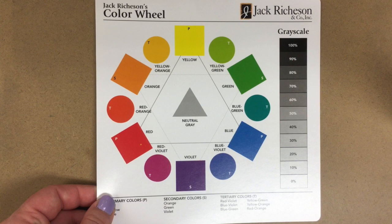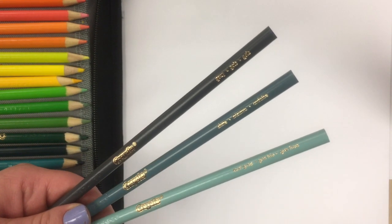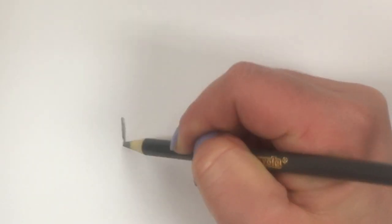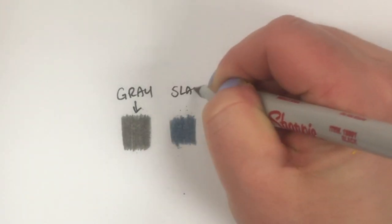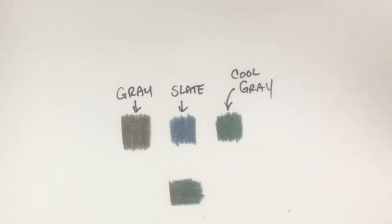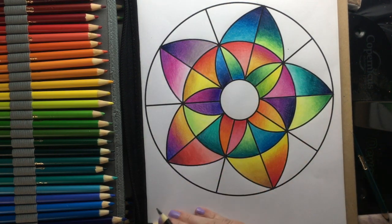If you mix all of the colors equally you get a neutral gray. So if you add a little bit more of one color like red, it'll be a warmer gray; a little bit more of a cooler color like blue, you'll get a cooler gray. There are seemingly endless amounts of grays you can create. Crayola gives you three: gray, slate, and cool gray. They look like three different values — dark, medium, and light — but they are all the same value. They're just simply three different grays, so you really can't blend one with the other and expect a nice contrast.